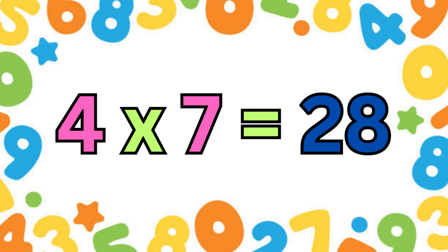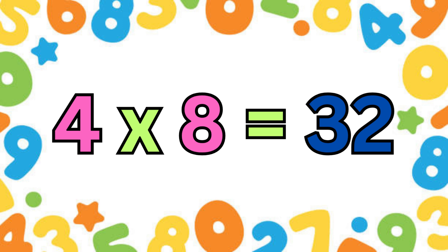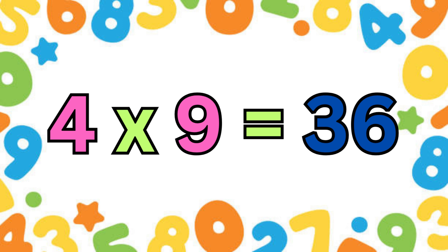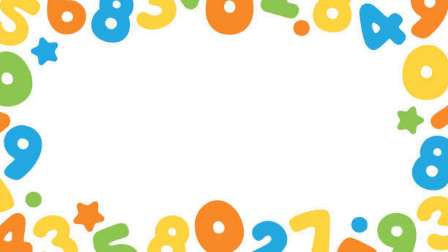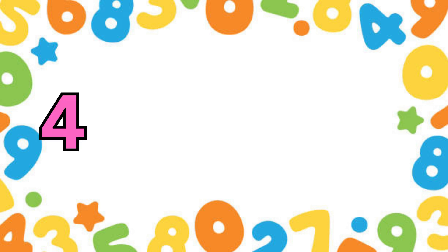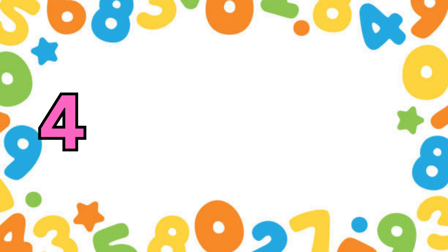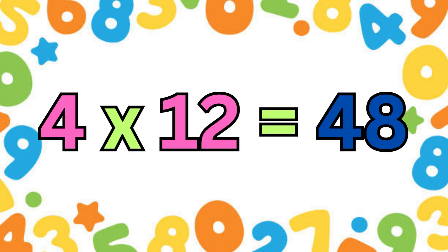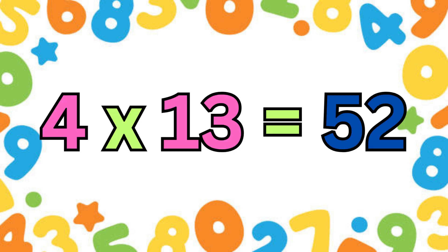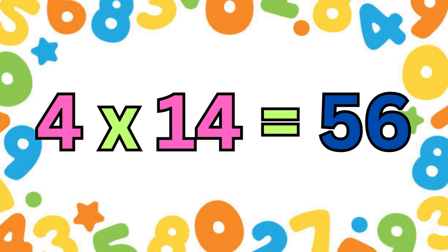twenty-eight, four eights are thirty-two, four nines are thirty-six, four tens are forty, four elevens are forty-four, four twelves are forty-eight, four thirteens are fifty-two, four fourteens are fifty-six.